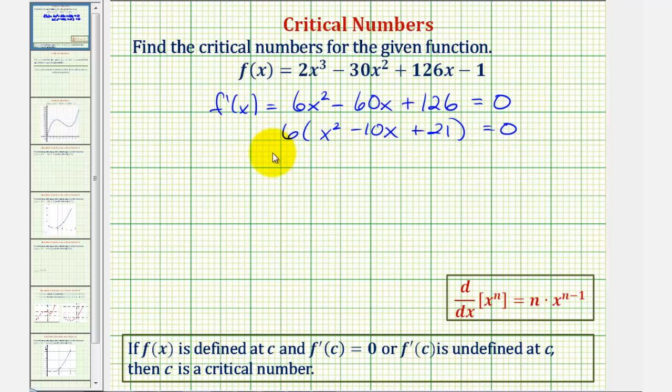Now we'll factor the trinomial. Factors of x² are x and x. The factors of 21 that add to negative 10 are negative three and negative seven. So the values that make this product equal to zero, and therefore the derivative equal to zero, would be x equals three or x equals seven.